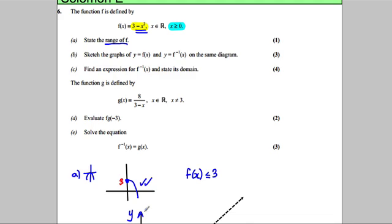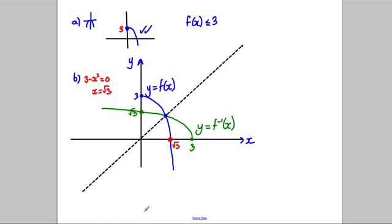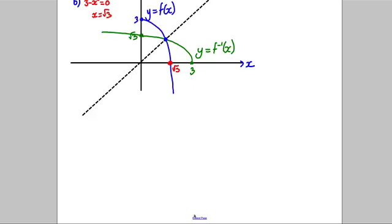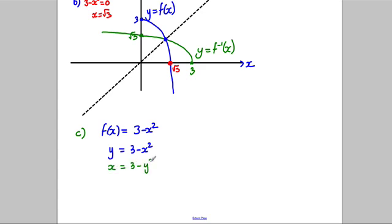Find an expression for the inverse function and state its domain. The original function is f(x) = 3 subtract x squared. Let y = 3 subtract x squared. Swap the roles of x and y, so x = 3 subtract y squared, and make y the subject. So y squared = 3 subtract x, and therefore y is the positive or negative square root of 3 subtract x.